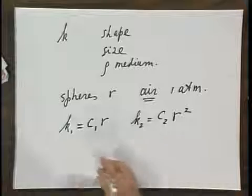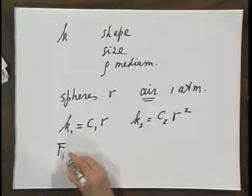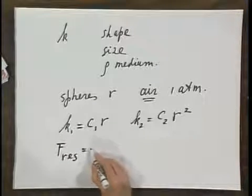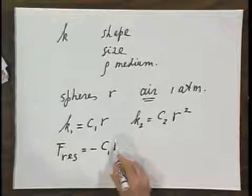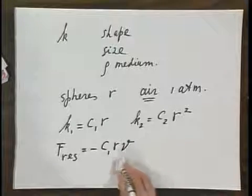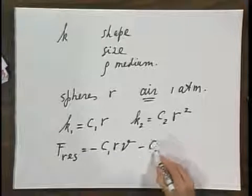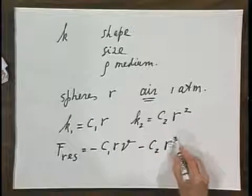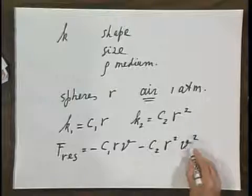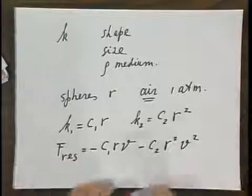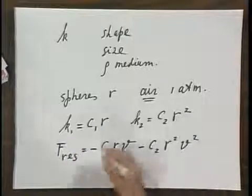So my equation becomes that the resistive force equals minus C1 R V, that is the term proportional with the speed V, minus C2 R squared V squared. This is the term proportional with V squared.